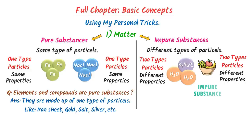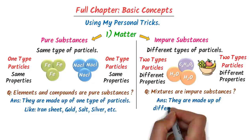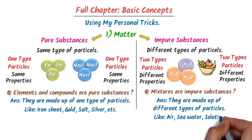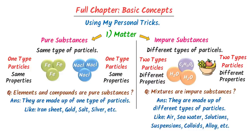Another important exam question: why are mixtures called impure substances? Mixtures are called impure substances because they are made up of different types of particles. Remember the names of these important mixtures: air, seawater, solutions, suspensions, colloids, and alloys like steel, which are usually asked in MCQs.